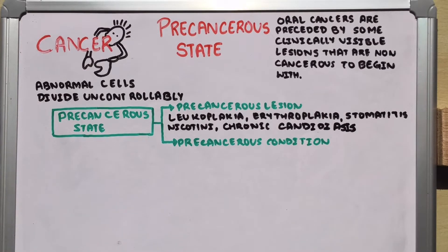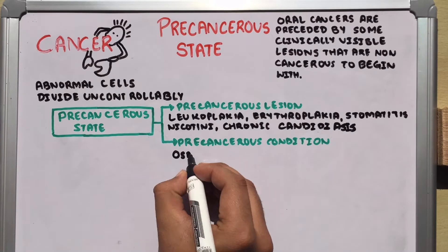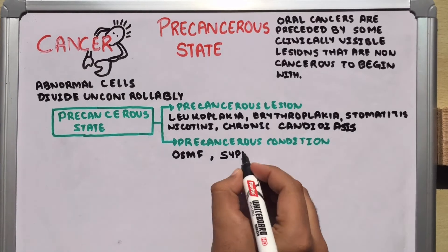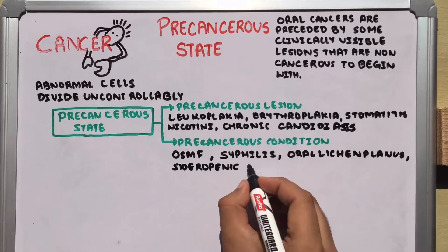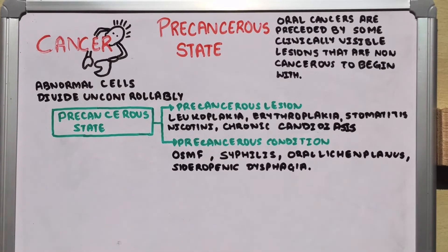A precancerous condition is defined as a generalized state of the body which is associated with a significantly increased risk of cancer. Examples include OSMF (oral submucous fibrosis), syphilis, oral lichen planus, and sideropenic dysphagia.